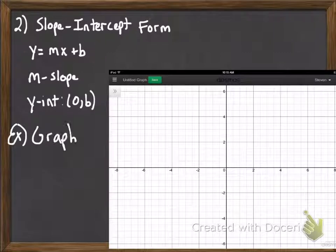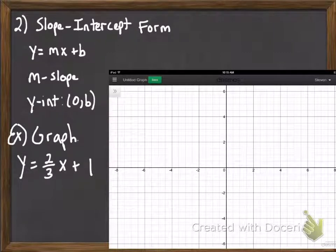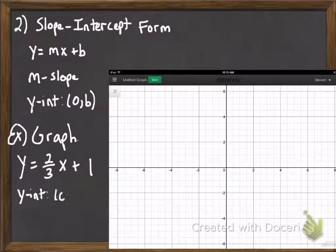So one of the things we can do is using slope-intercept form, we can actually really quickly, just from having the equation written in that format, draw a quick sketch of the graph. The y-intercept here is (0, 1), so I'm going to mark that on our graph.